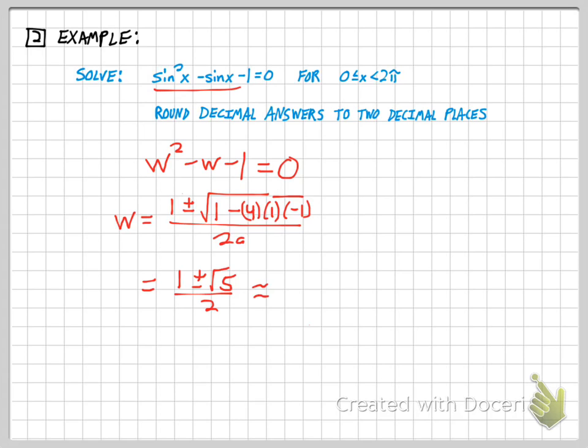And if I want the decimal answers for that, I can pull out my calculator and figure those out. What I get is two decimal answers for that. And if that's what w is equal to, then we know that that's what sine of x is equal to. I'm going to break this into two problems now because I've got two little mini problems to solve. These are clearly not special unit circle values, but rather ones that I have to kind of think about and solve with my calculator.